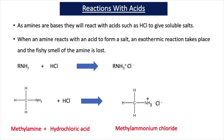The ionic bonding that exists in these amine salts is the reason why many are crystalline solids, because the ionic bonding and the strong electrostatic forces between the ions result in higher melting points and boiling points than the original amine.